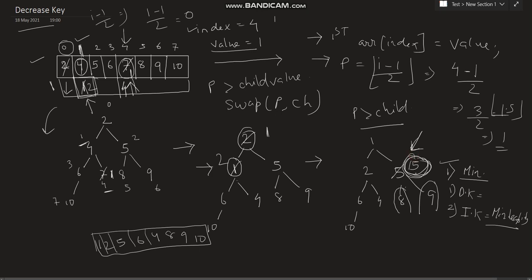As explained in my previous video on heapify and min-heapify: we compare 15 with its left child and right child values, and whichever is the minimum we swap 15 with that minimum. The minimum value is 8, so 8 moves up and 15 moves down. So in min-heap: for decrease key, compare the decreased value with the parent and move up to the root (iterate up to index 0). For increase key in min-heap, perform min-heapify on that node.